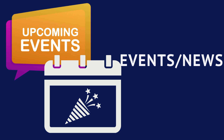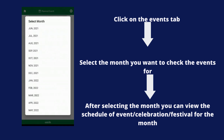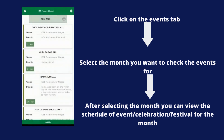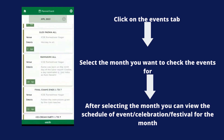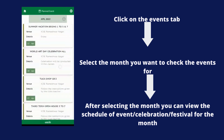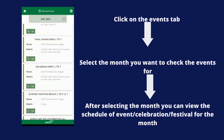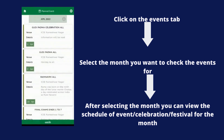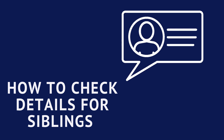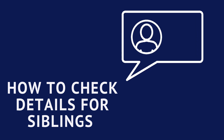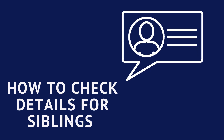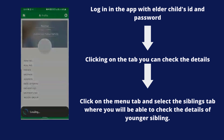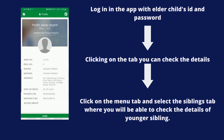Now let's look at the Events tab, which celebrates events conducted by the school. When you click on the Events tab, select the month you wish to see events for. After selecting the month, you can view the schedule of events for that month.